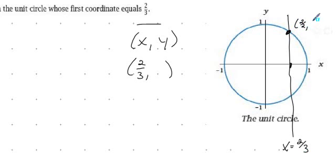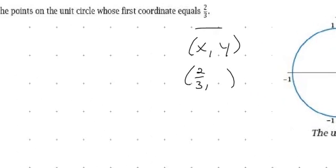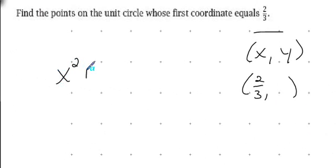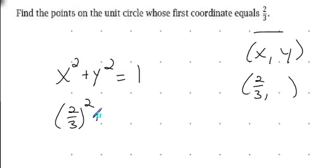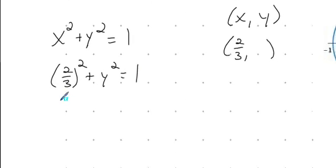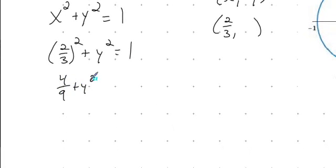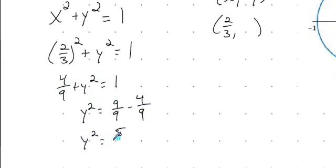We know it has two-thirds as its x value and we're trying to find its y value. We also have a point down here that has an x coordinate of two-thirds but obviously a negative y value — we need to find both values. Since the unit circle is x squared plus y squared equals one, and x is two-thirds, substituting in: (2/3) squared plus y squared equals one, giving us four-ninths plus y squared equals one. Converting: nine over nine minus four-ninths gives us y squared equals five-ninths.